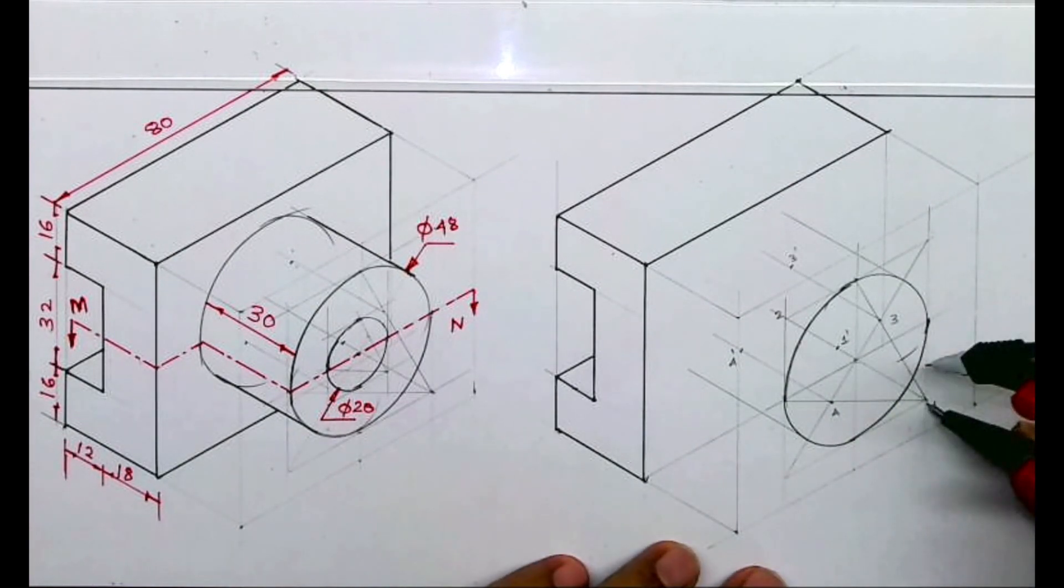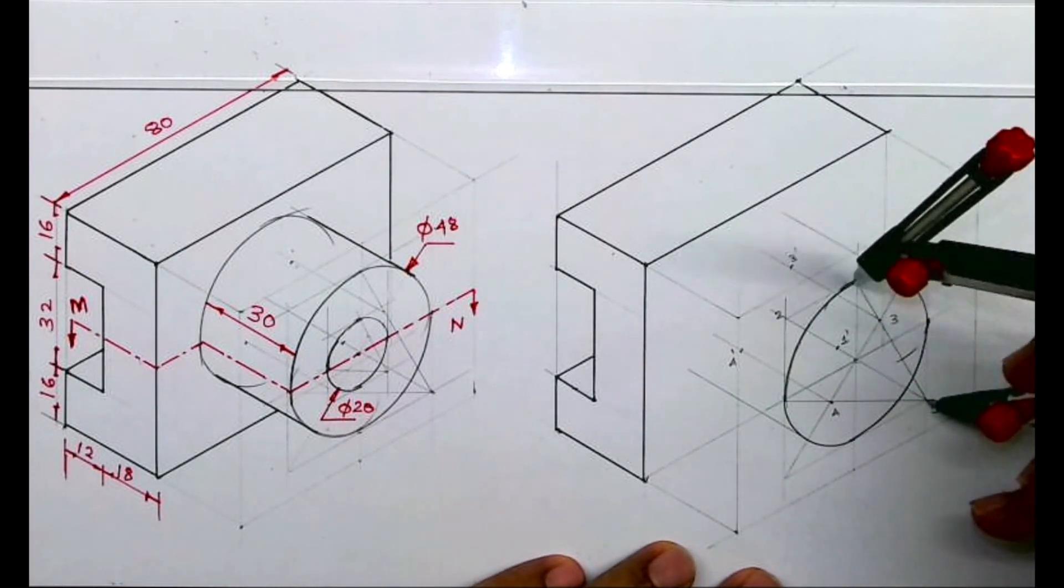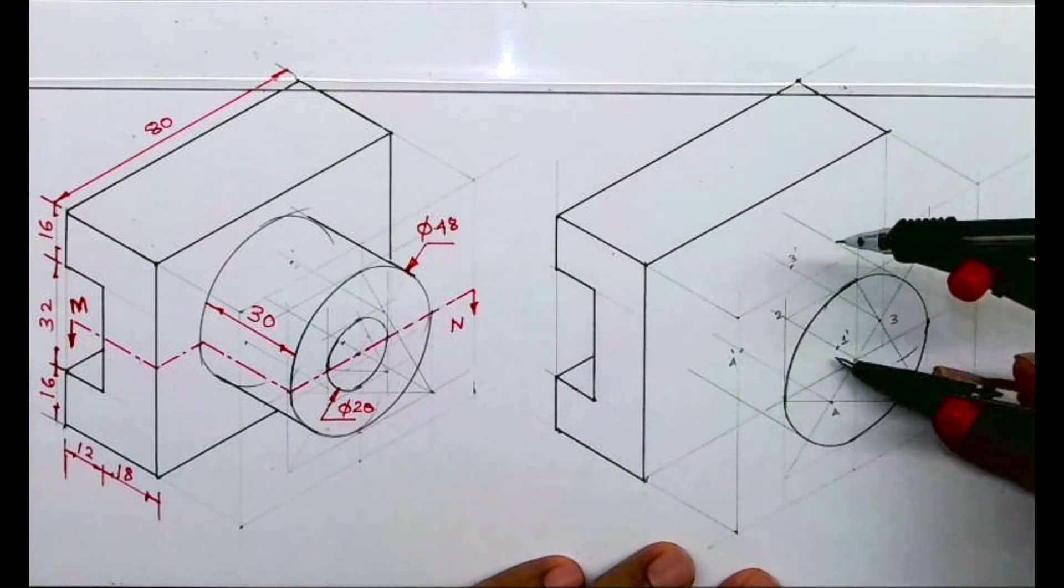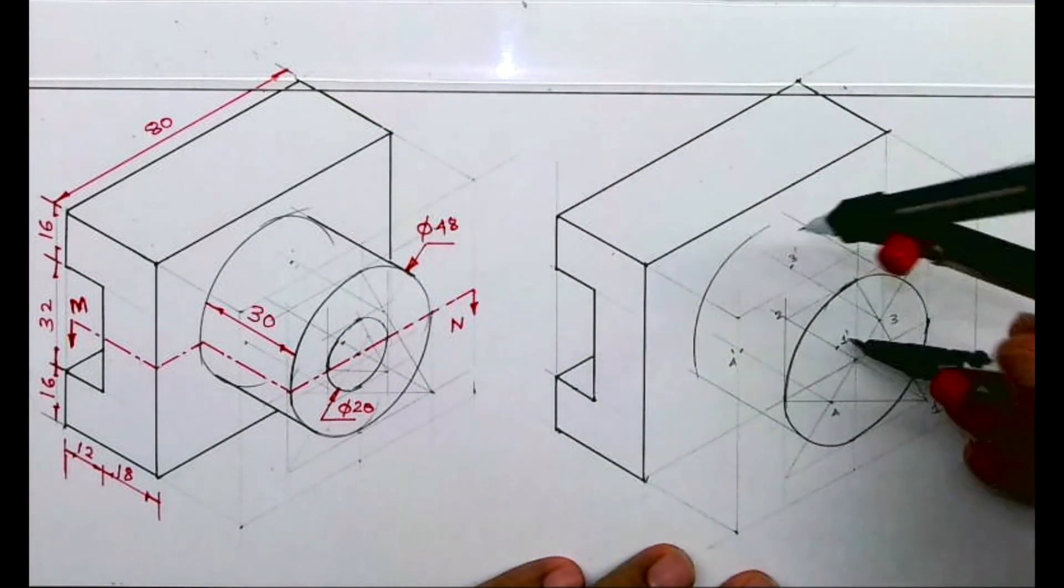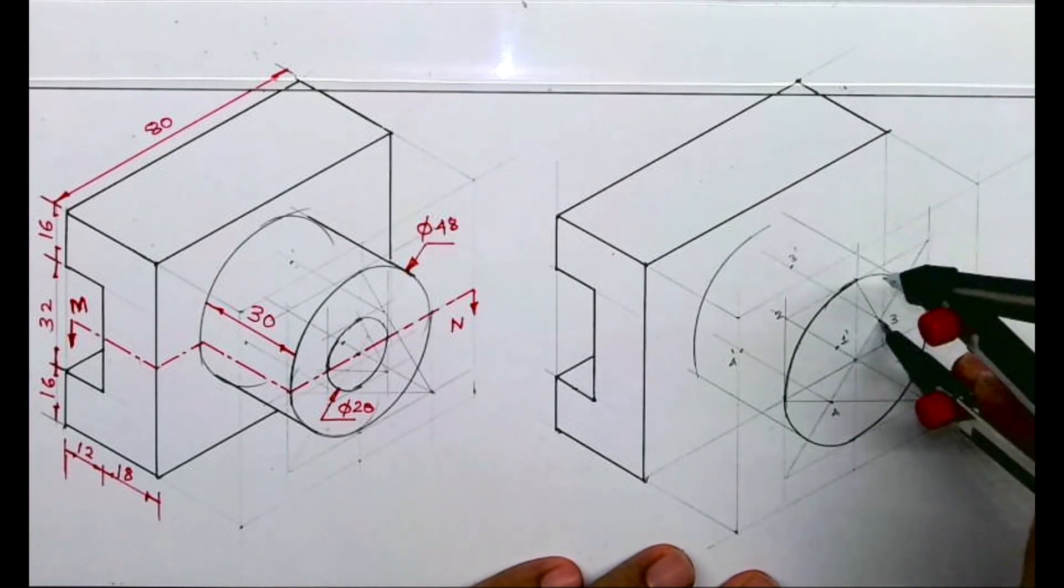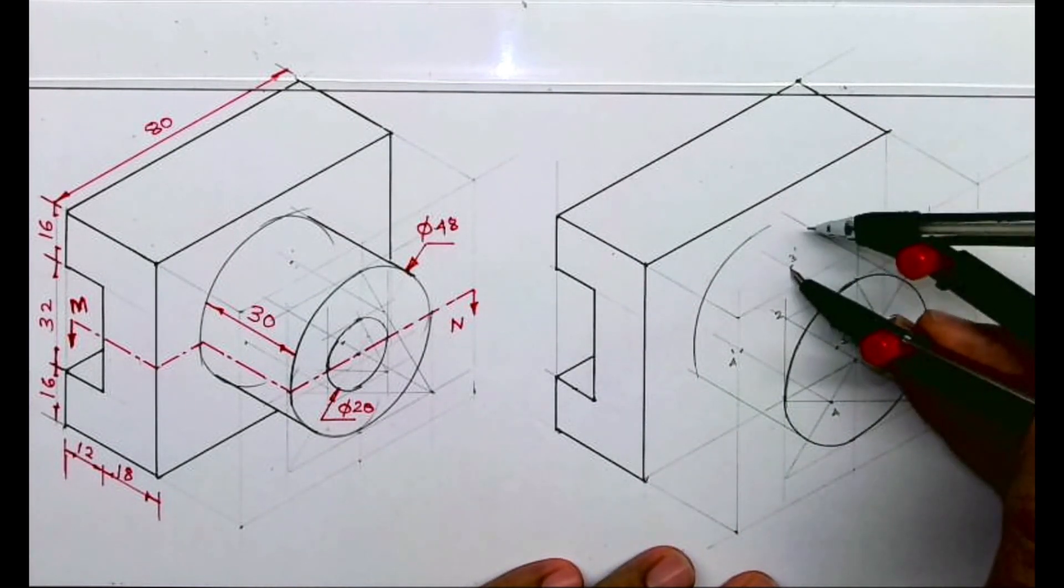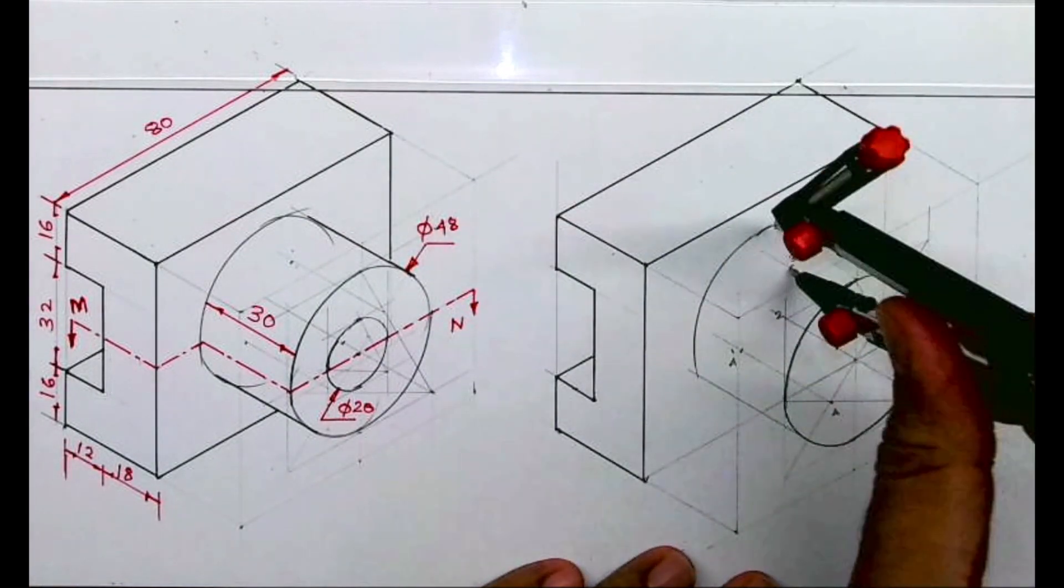If you don't want to do that, then you can draw again a rhombus, or I can say this is a shortcut method. You take an arc from 1, and from 1 dash you cut an arc. You take an arc from 3, 3 to M, whatever radius you have taken. From 3 dash you draw an arc, and same with 4 dash.